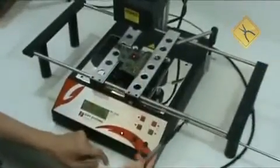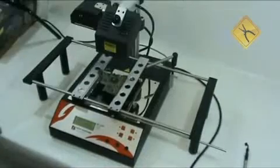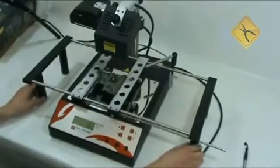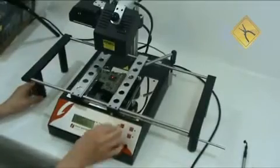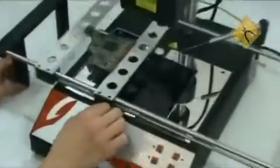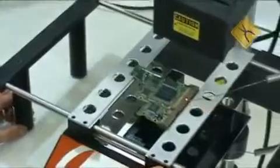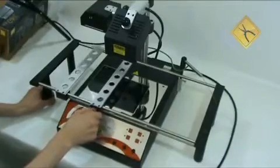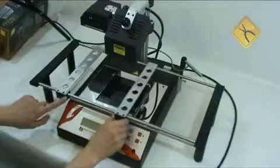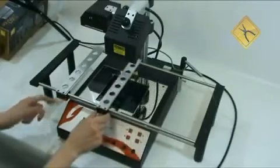PCB support stand is convenient and fixes the PCB securely. The supports easily slide along the guiding ways. There is a fixation screw that allows moving the supports separately. And after choosing the size and fixing PCB with the screw, the supports may be moved jointly again.